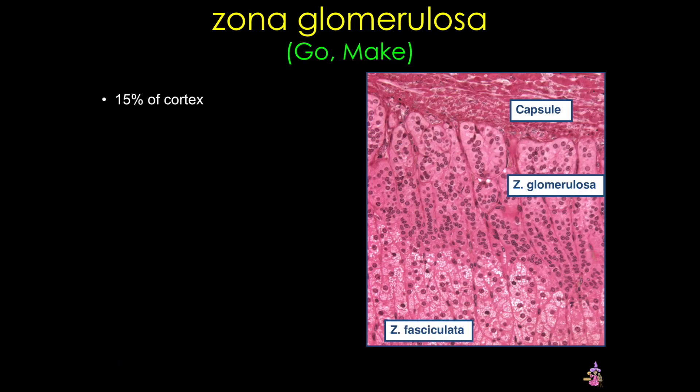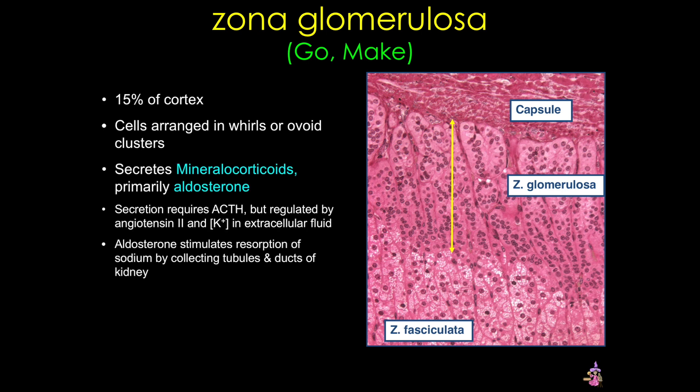First up, we have the zona glomerulosa, also known as 'Go Make.' This zone is composed of whorls or ovoid cords of small eosinophilic cells, and the primary function of this zone is to secrete mineral corticoids, primarily aldosterone. Recall that aldosterone regulates electrolyte and water balance, and in its absence you see depletion of sodium and retention of potassium, which can be fatal. This is the reason that the adrenal cortex is necessary for life.